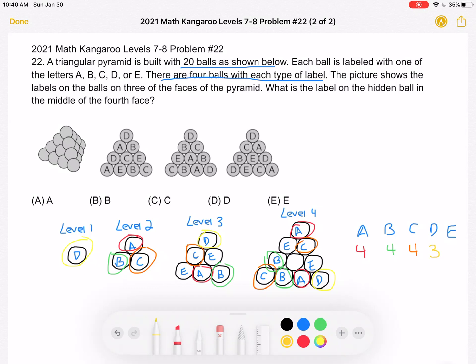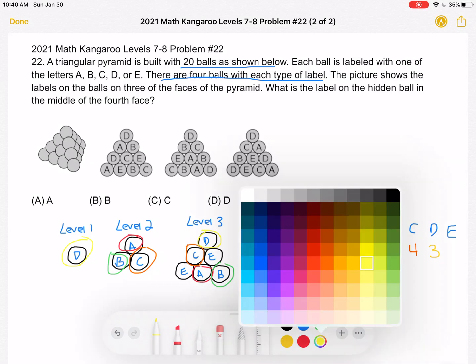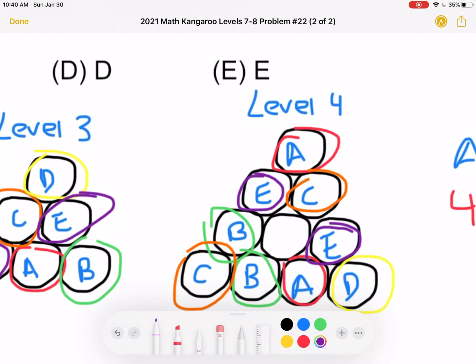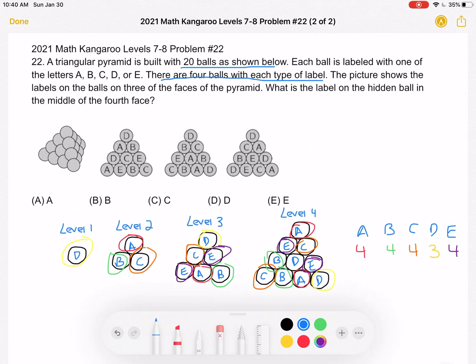But let's just keep going to double check. We have four E's. So we have one, two, three, four. So the one that we're missing is D. That means that this ball here in the center must be a D for there to be four D's. And that is answer choice D.